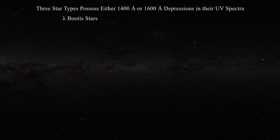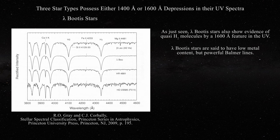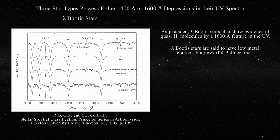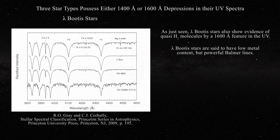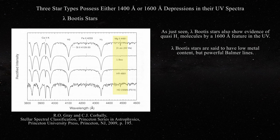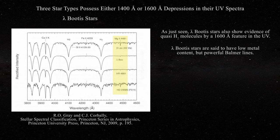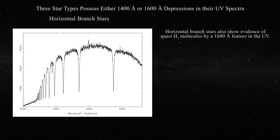Lambda Boötis stars, which also have the 1600 angstrom feature caused by quasi-molecules, are said to have very low metal content but have similar Balmer line absorption features. In this figure taken from Gray and Korbali, four stars are being compared. The two middle spectra are from Lambda Boötis stars. It is argued that the Magnesium 2 line at 4481 angstroms is much weaker in Lambda Boötis stars; however, the line is clearly present in the second and third spectra — it is just that the Balmer lines are so powerful. This is the same effect as seen in DA white dwarfs. The third type of star containing evidence for quasi-molecular hydrogen are the horizontal branch stars, where the metal content is thought to be low and the Balmer lines are once again known to be strong.